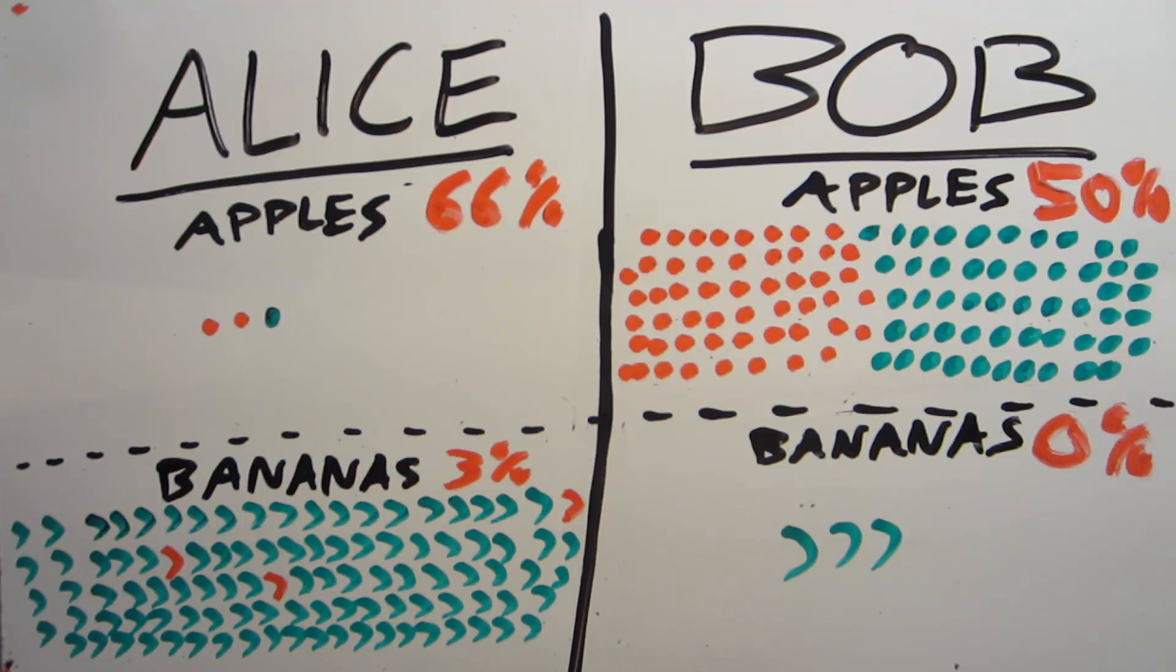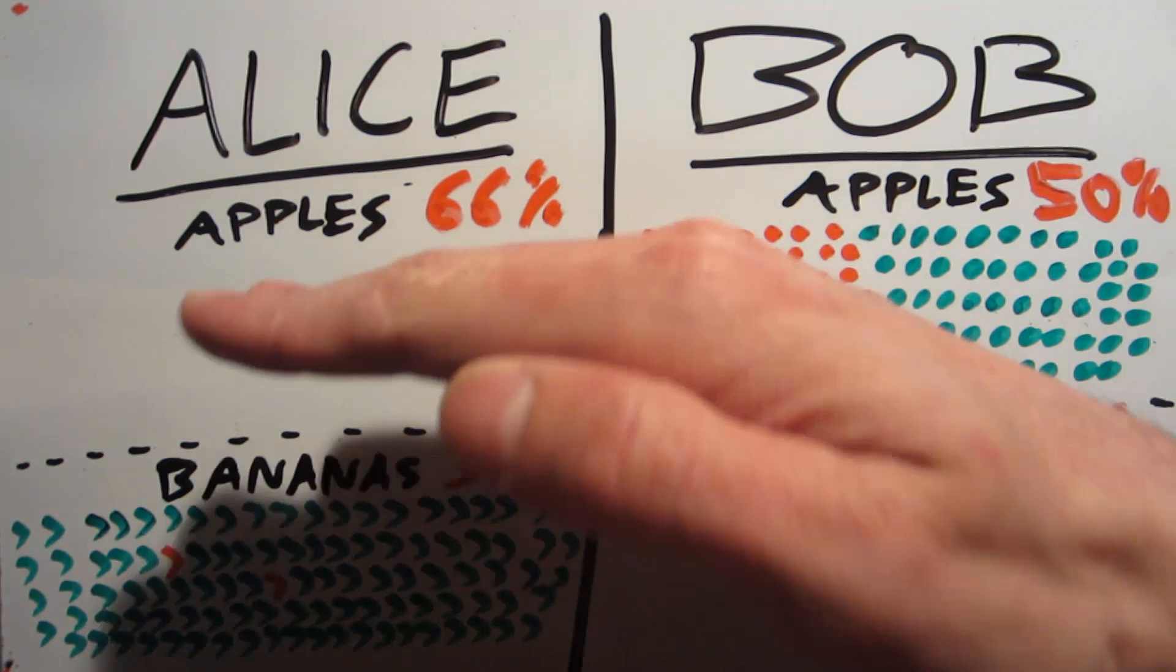So what exactly is going on here? How should we read these statistics? What's going on here is that we're making an unfair comparison between Alice and Bob's fruits. The reason it's unfair is because there's a lurking variable, and the lurking variable is the type of fruit that they're selling.